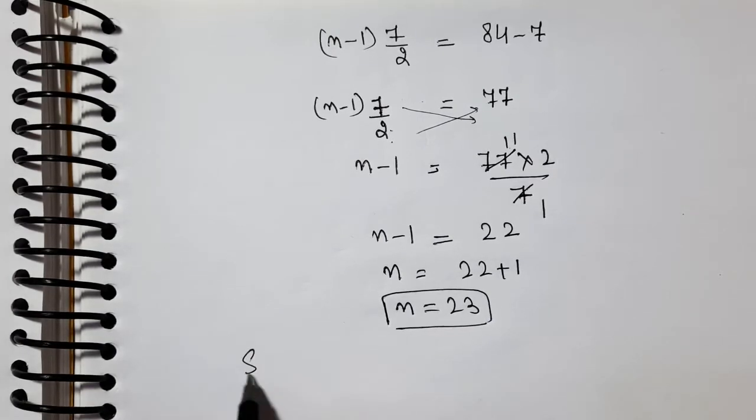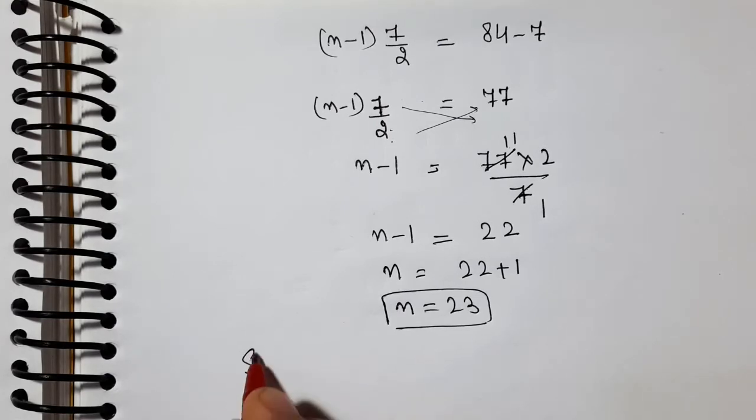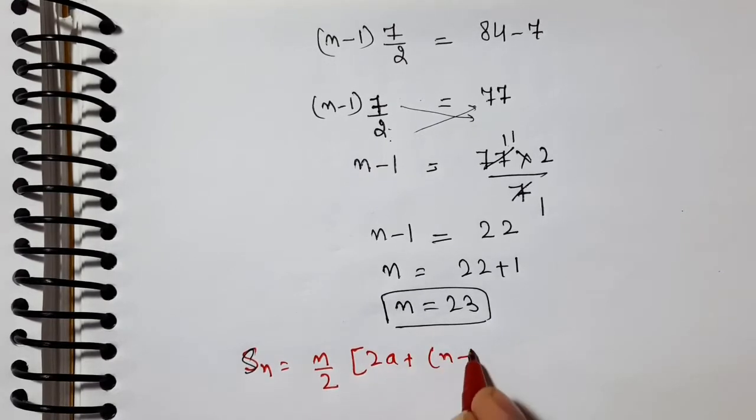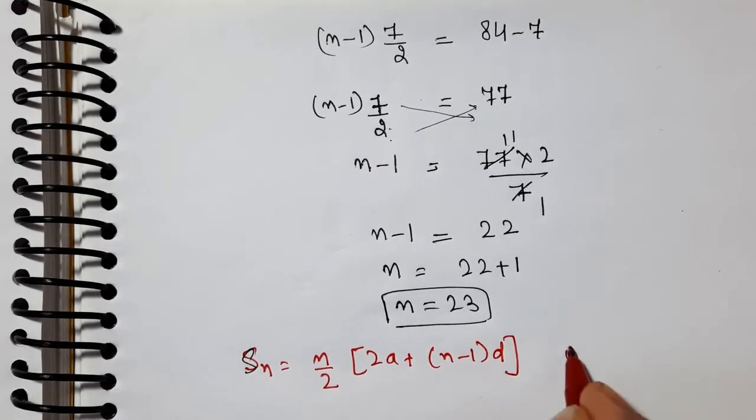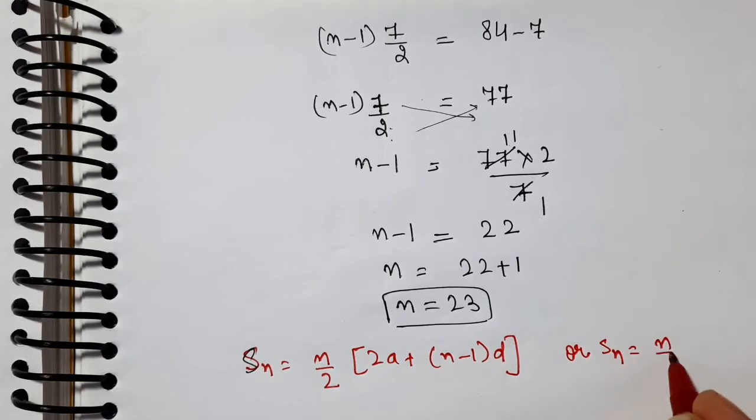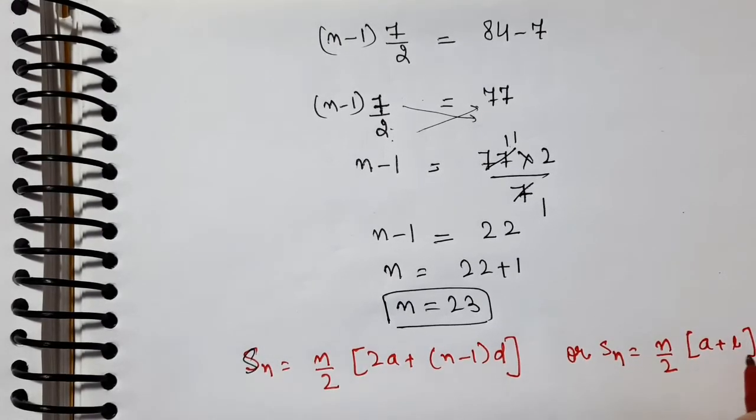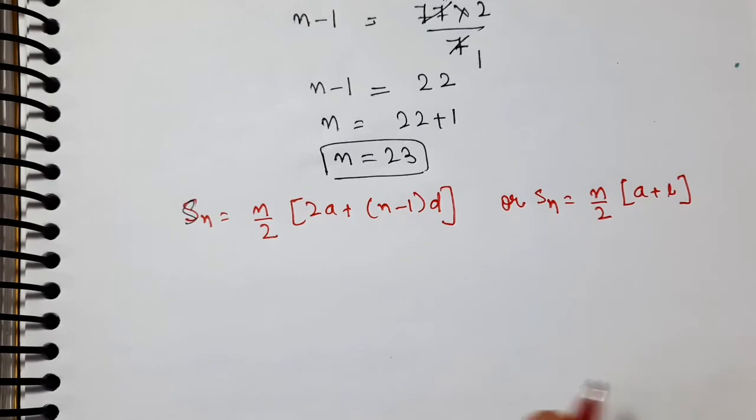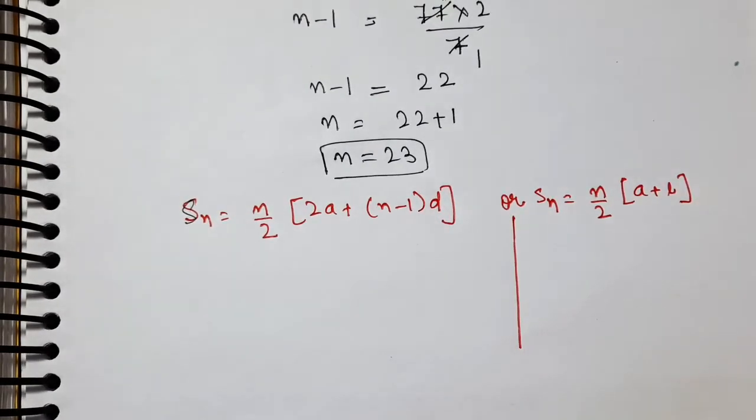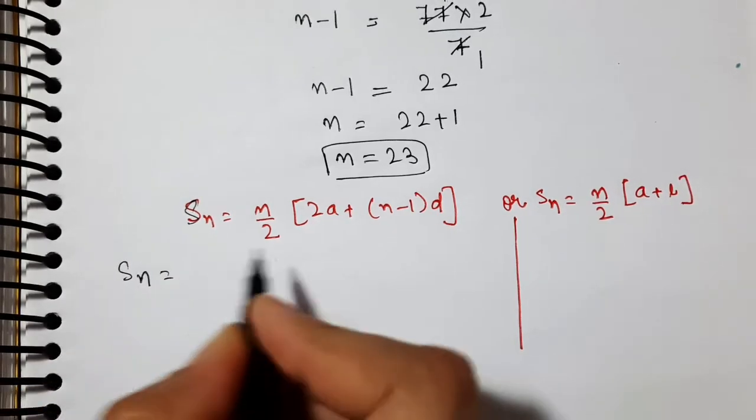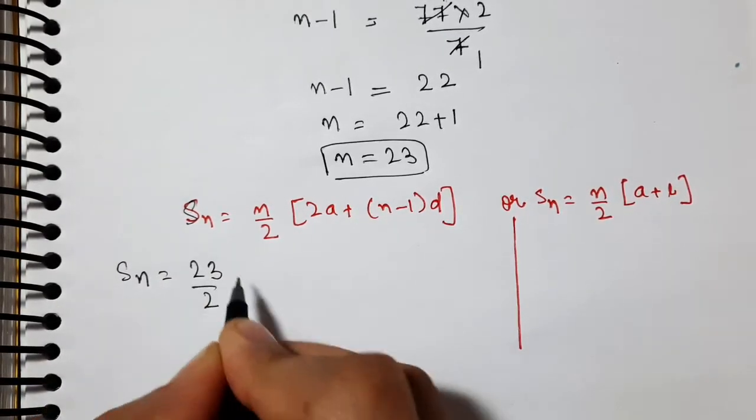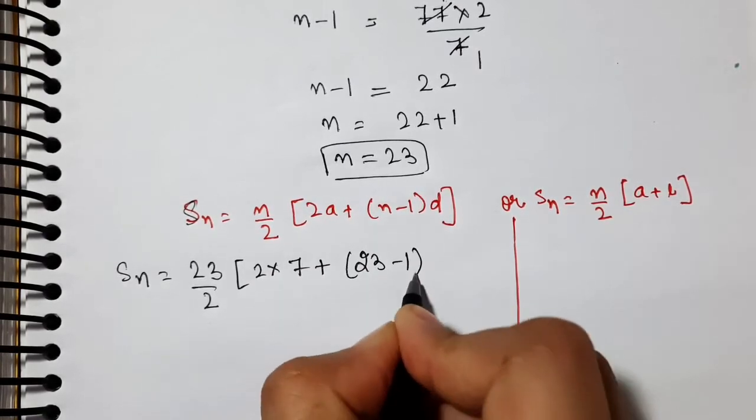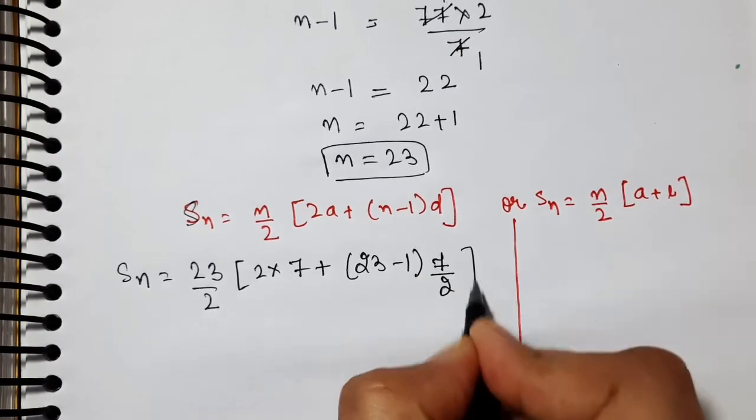After subtracting, it becomes 77. Now see what we have to do next. We need n value. So we'll shift 2 to the other side and 7 also. This will cross multiply - 2 goes to numerator and 7 goes to denominator. 77 times 2 upon 7. What's in the numerator goes to denominator on the other side, and what's in denominator goes to numerator.